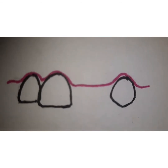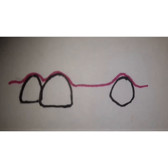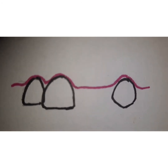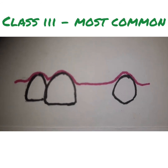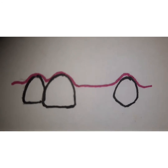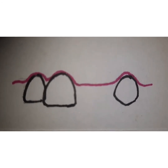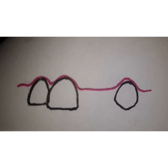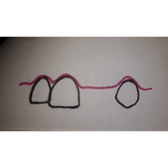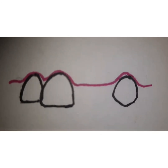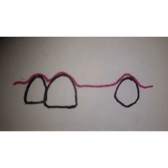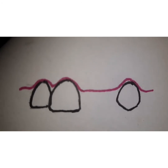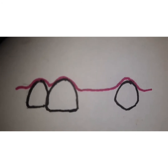A study by Adams in 1980 stated that most residual ridge defects fall into a Class 3 situation — that is, there is loss of both height and width of the residual ridge. Depending on the type of ridge defect, we need to manage accordingly, and there are six ways in which we can correct ridge defects to achieve a good ridge contour and aesthetically pleasing fixed partial dentures.